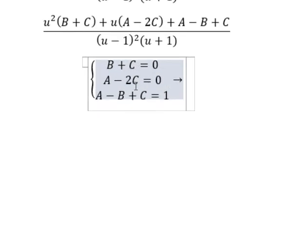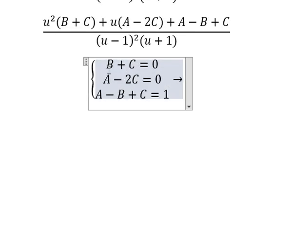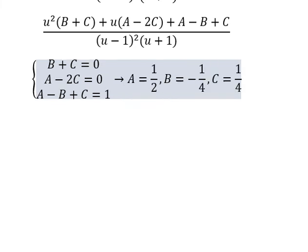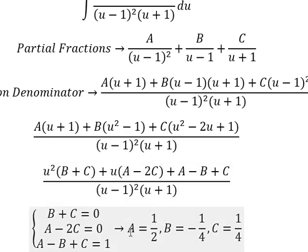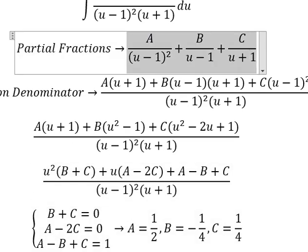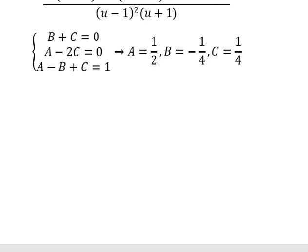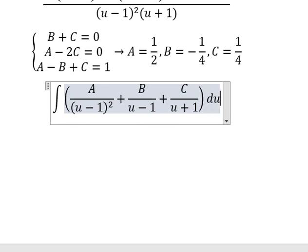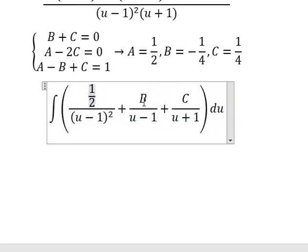Now we need to find the solutions for A, B, and C. So A equals 1 over 2, B equals negative 1 over 4, and C equals 1 over 4.